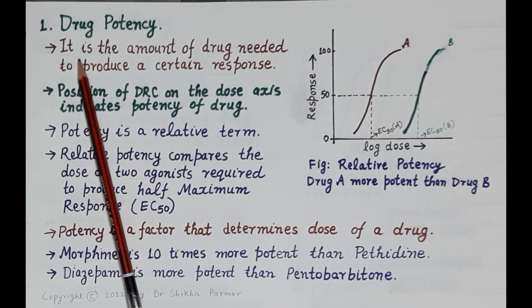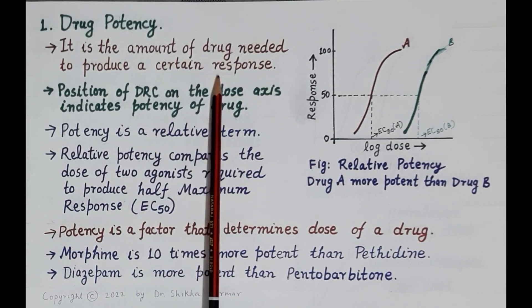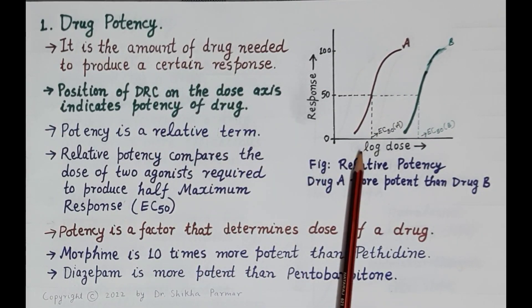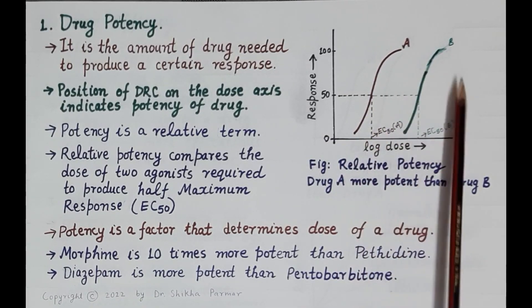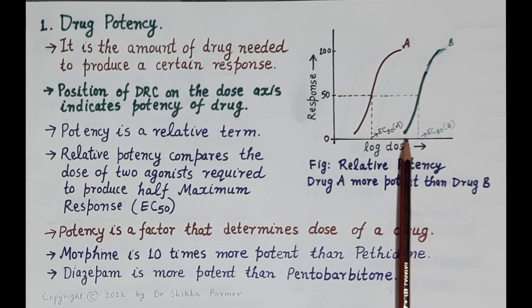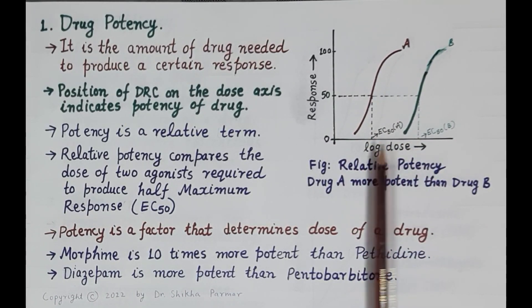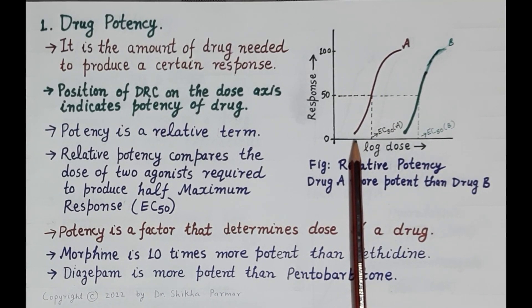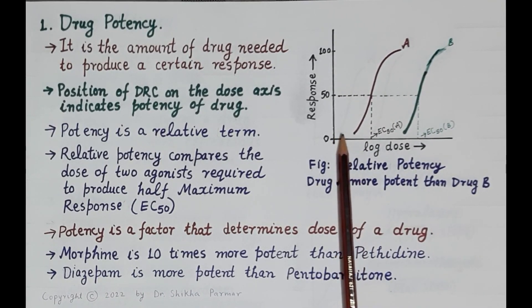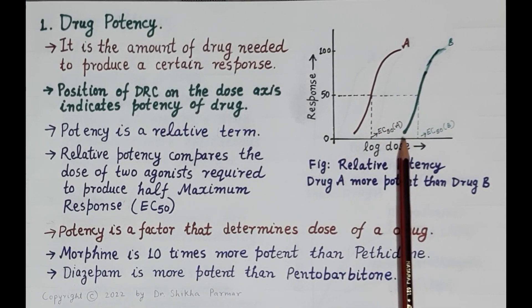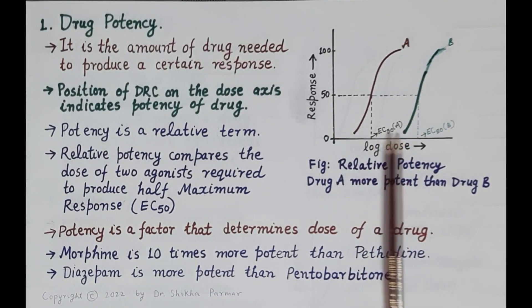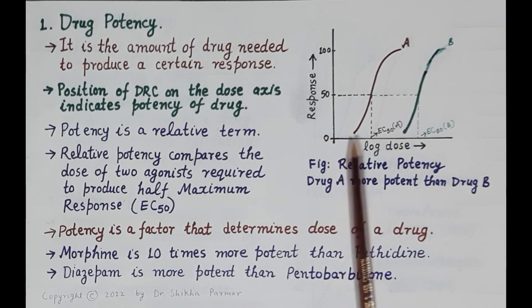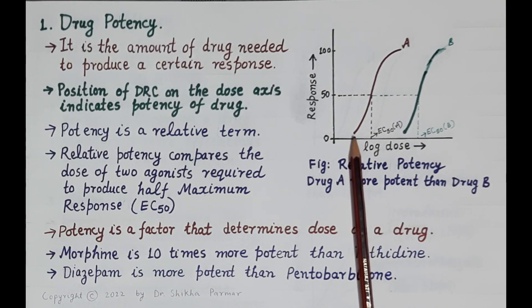First, drug potency. Potency of a drug is the amount of drug needed to produce a certain response. Looking at the DRC of two drugs — Drug A and Drug B — a smaller dose of Drug A is required to produce the first response (around 5 to 10 percent of the response) compared to Drug B. The position of the DRC on the dose axis (x-axis) indicates the potency of the drug.